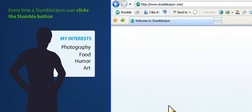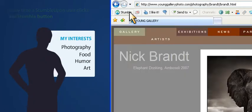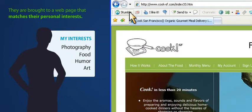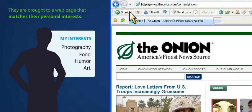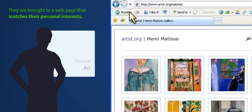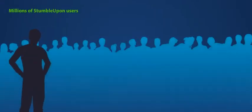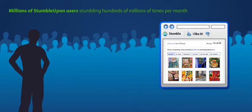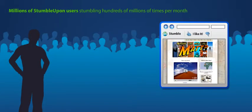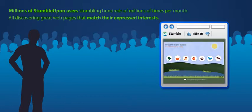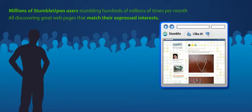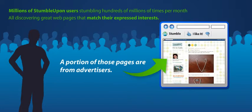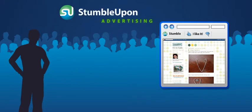Every time a StumbleUpon user clicks the Stumble button, they're brought to a webpage that matches their personal interests. There are millions of StumbleUpon users, stumbling hundreds of millions of times per month, all discovering great webpages that match their expressed interests. A portion of those pages are from advertisers. With StumbleUpon Advertising, one of those pages could be yours.